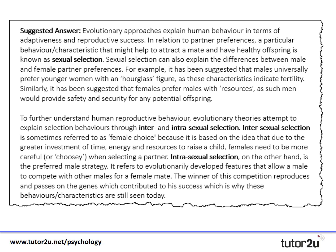Sexual selection can also explain the differences between males' and females' partner preferences. For example, it's been suggested that males universally prefer younger women with an hourglass figure as these characteristics indicate fertility. Similarly, it's been suggested that females prefer males with resources, as such men would provide safety and security for any potential offspring.